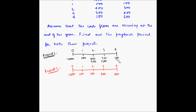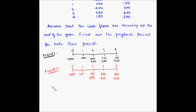At the end of the fourth year we'll have 1200 plus 100, which is 1300 rupees. For project L, at the end of the second year we'll have 100 plus 300. At the end of the third year we'll have 800 rupees, and at the end of the fourth year we'll have 800 plus 600, which is 1400 rupees.